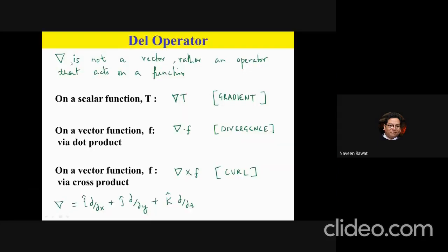This operator is called the del operator, and again it is not a vector — it is an operator that acts on a function. How it acts on a function defines what we get. When it acts on a scalar function, we get the gradient. If we take the dot product of del with a vector function F, we get something called the divergence. If we take the cross product, we get the curl.